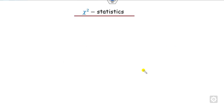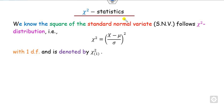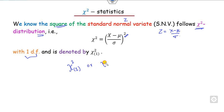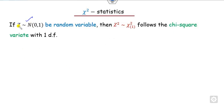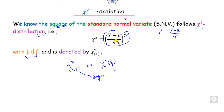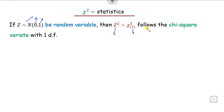On the other hand, the chi-square statistic is defined as follows: if you have a standard normal variate z, then the square of z follows the chi-square distribution with one degree of freedom, abbreviated as shown here. Some books write it this way, where the 1 denotes the degree of freedom. In other words, if z is a standard normal variate with mean 0 and variance 1, then z-squared follows the chi-square distribution with one degree of freedom.